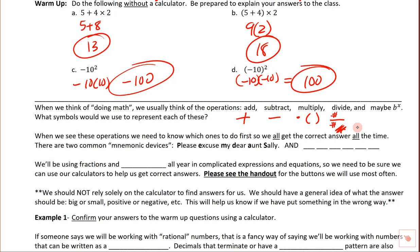You'll occasionally see the division symbol from elementary school, but we typically don't use it past this point. For exponents, say 2 to the 3rd, we represent that with a caret key. When we see these operations, we need to know which one to do first so we can all get the same correct answer.